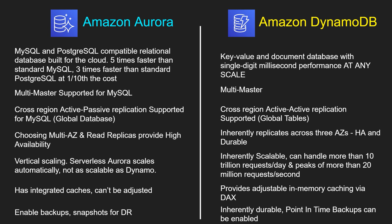Amazon Aurora has an integrated cache, however it is managed behind the scenes and you cannot adjust or fine-tune anything. For DynamoDB, it provides adjustable in-memory caching via DynamoDB Accelerator, or DAX. You can enable backup and snapshots for disaster recovery for Amazon Aurora. Amazon DynamoDB is inherently durable, however point-in-time backups can also be enabled.